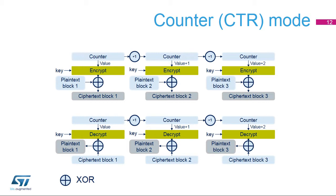The counter mode, known as CTR mode, uses the AES core to generate a key stream. The keys are then XORed with the plaintext to obtain the ciphertext. Unlike ECB and CBC modes, no key scheduling is required for the CTR decryption, since in this chaining scheme the AES core is always used in encryption mode for producing the key stream or counter blocks.